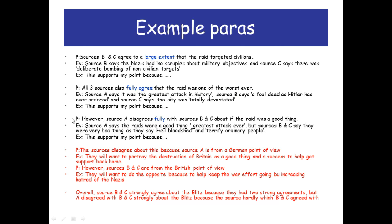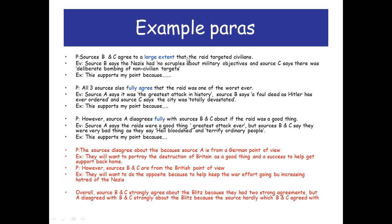Using the sources provided as an example — Point-Evidence-Explain, Point-Evidence-Explain, Point-Evidence-Explain, point-evidence, point-evidence, conclusion. Your first opening paragraph: sources B and C agree to a large extent that the raid targeted civilians — evidence explained. All three sources fully agree that the raid was one of the worst ever — evidence explained. However, source A fully disagrees with sources B and C about whether the raid was a good thing — evidence explained.